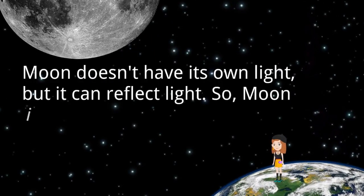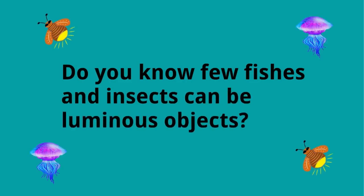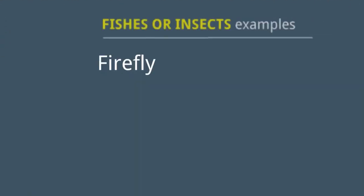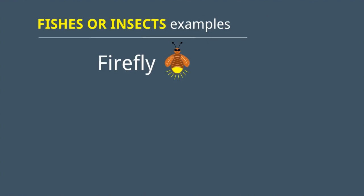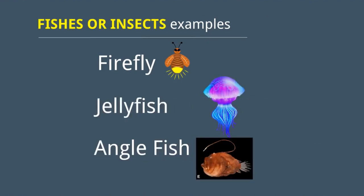The Moon does not have its own light — although it is bright at night, the Moon is an illuminated object. Did you know there are some fish and insects that are luminous objects? Like the firefly — you can see the light of a firefly — and jellyfish or anglerfish. These all have their own light and are luminous objects.